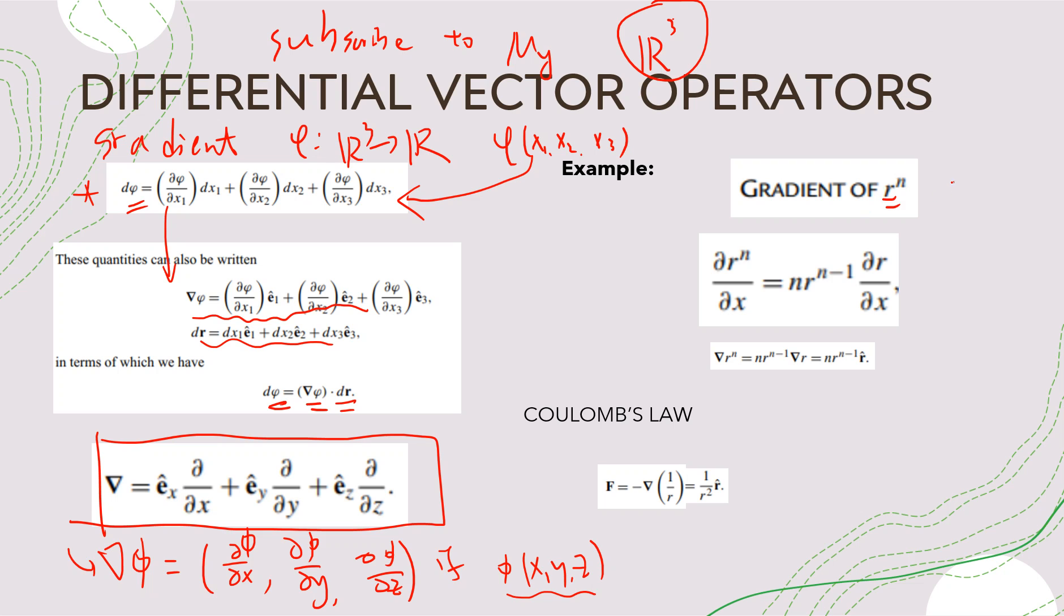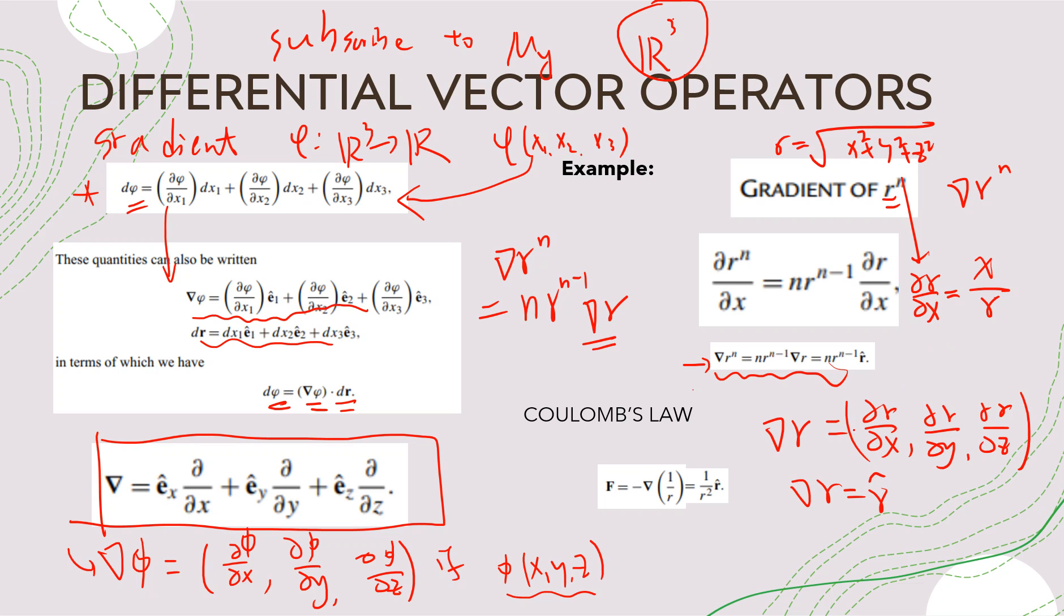So an example is: suppose somebody wants to calculate the gradient of R^n. So the gradient has the similar rules as Leibniz. So this is the chain rule, right? So gradient of R^n is basically n R^(n-1) gradient R, right? So all we need to know is calculate this gradient R. So gradient R, what is gradient R? Gradient R is partial R partial x, partial R partial y, partial R partial z. So remember this R now is square root of x squared plus y squared plus z squared. So partial R partial x is just x/R, right? So gradient R is just R hat. R hat means x over R, y over R, z over R, right? So this is R hat. So this is the answer.